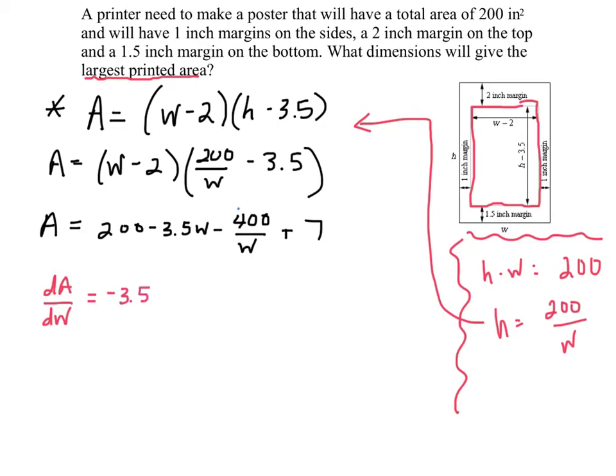This piece, 400 over w, we could write as 400w to the negative first. So it becomes, because it's minus now a negative, the derivative becomes plus 400 over w squared, because it would have been 400w to the negative second.